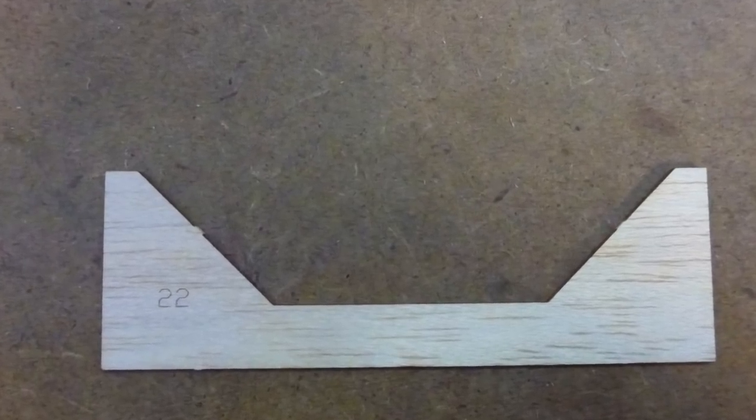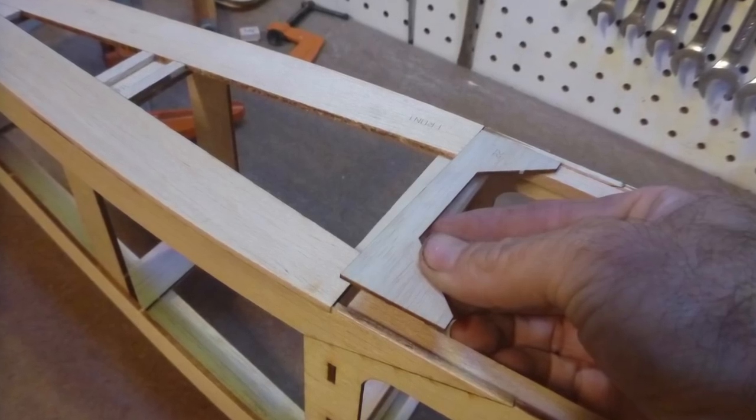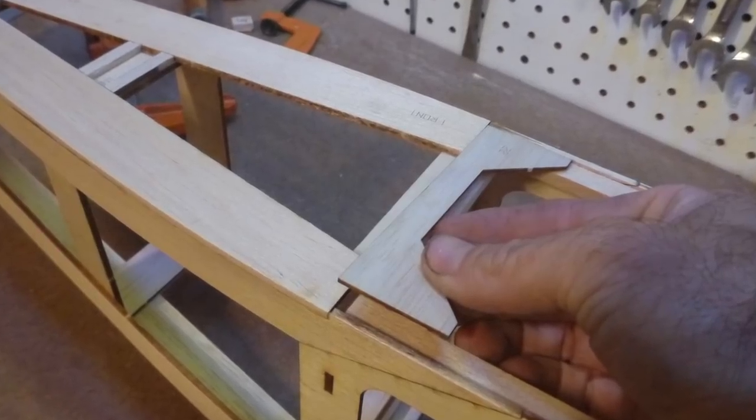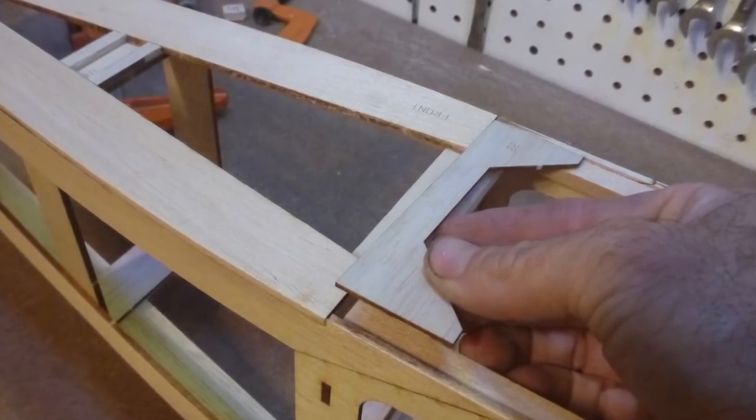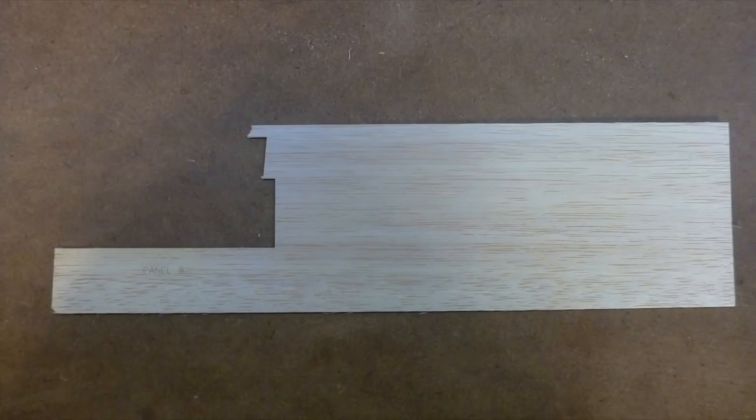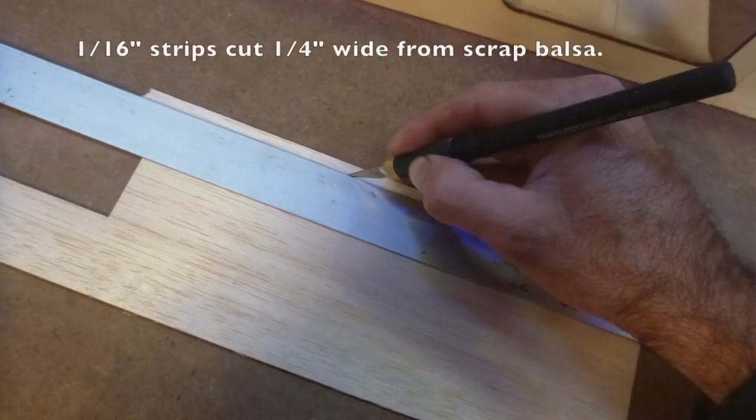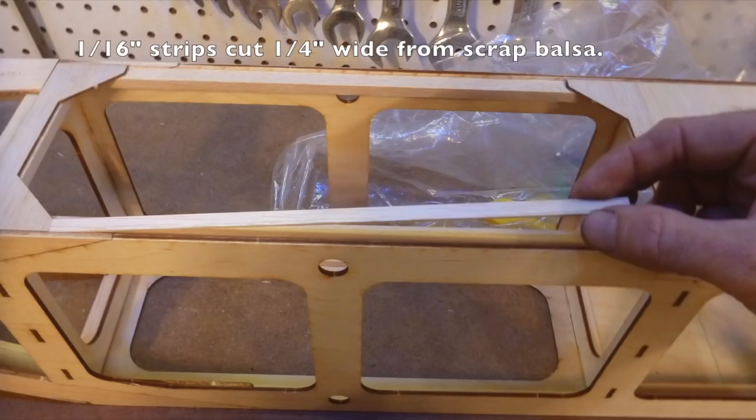Locate part number 22, and glue in place on top of the fuselage, at the rear end of the large payload bay. Next, from a piece of scrap 1-16 inch balsa, cut some quarter inch wide strips and glue them to the top payload bay stringers.